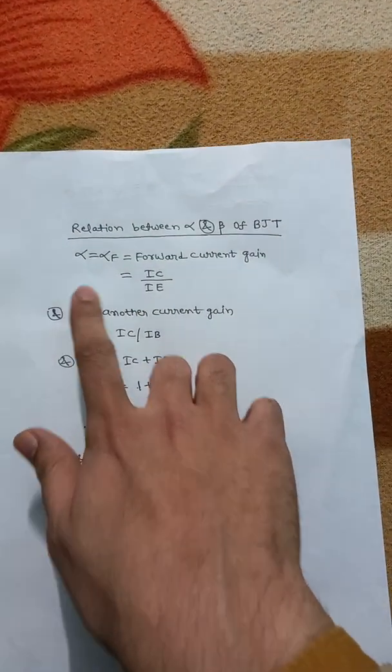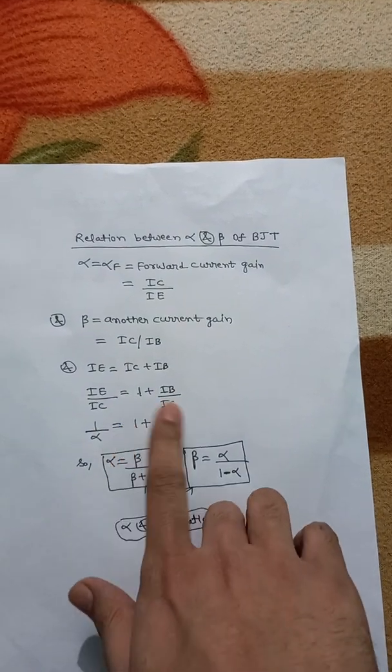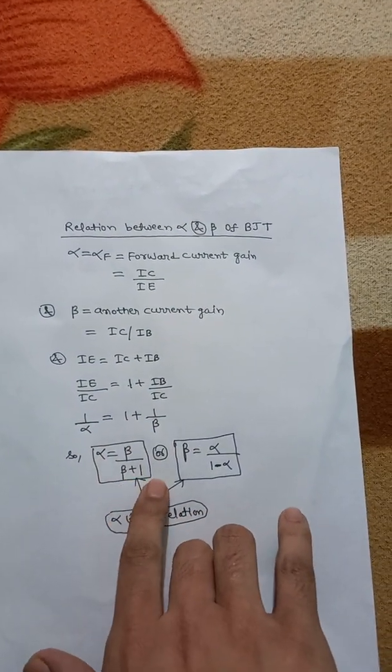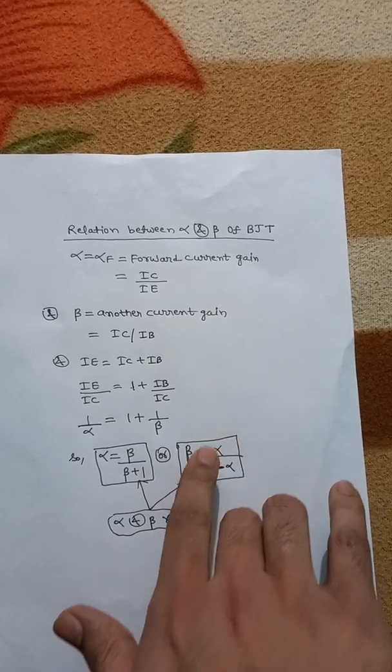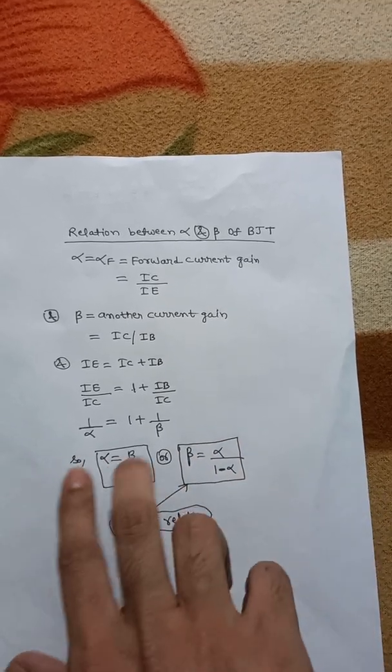After solving this, we get alpha = beta/(beta+1) or beta = alpha/(1-alpha). These are the two relationships.